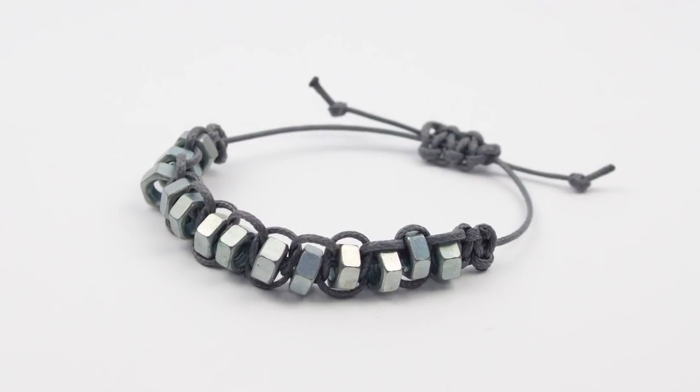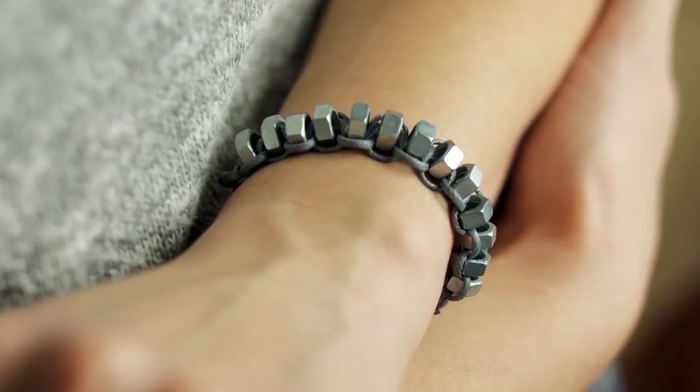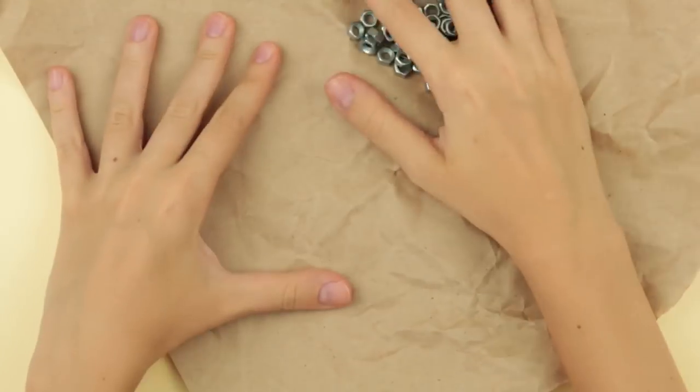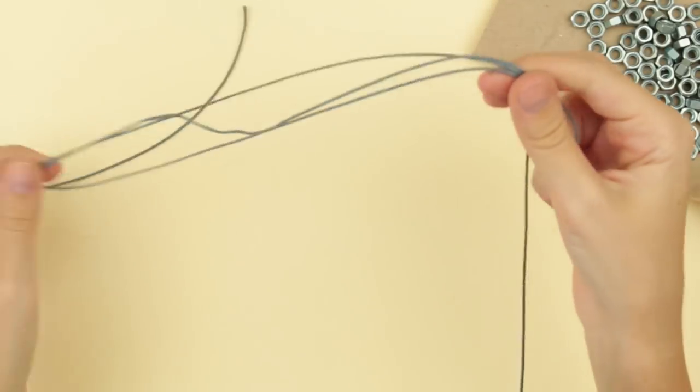Today, we will show you how to make an easy shambhala bracelet from simple screw nuts. We need ordinary screw nuts of a medium size, synthetic cord for making the shambhala.